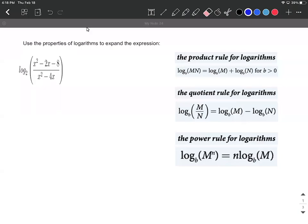All right, kind of a challenging one coming up here. Our goal is to expand this using the properties of logarithms. So we have log base 2 of the fraction x squared minus 2x minus 8 all over x squared minus 4x.